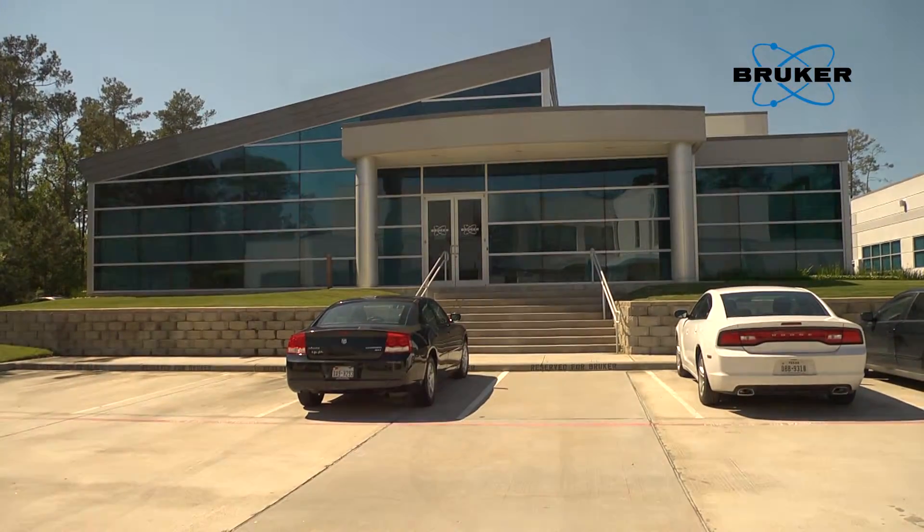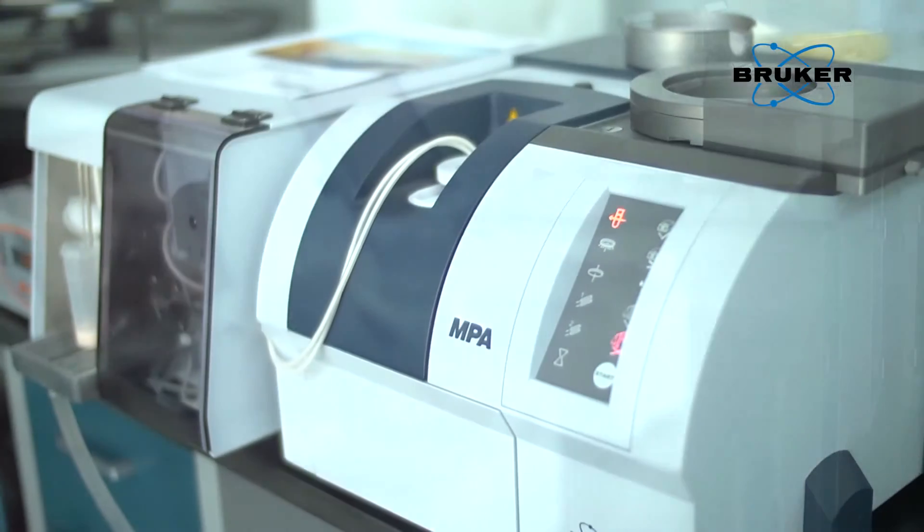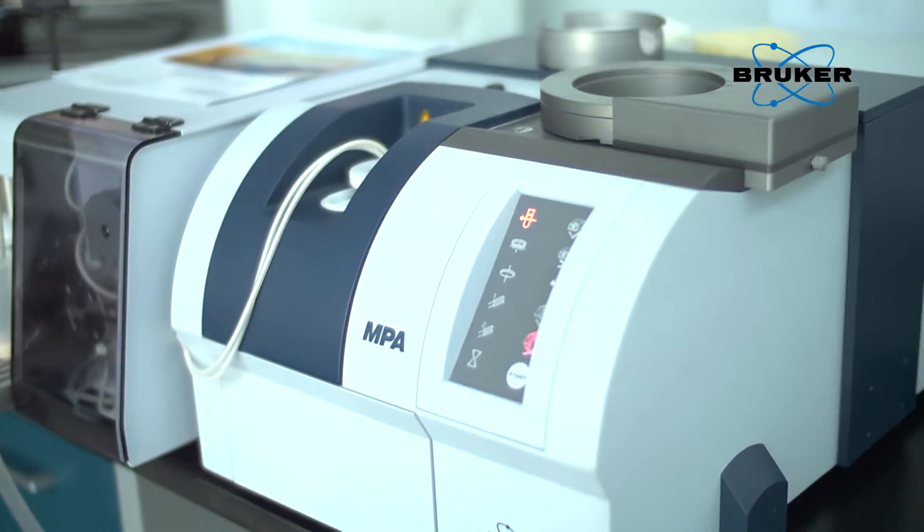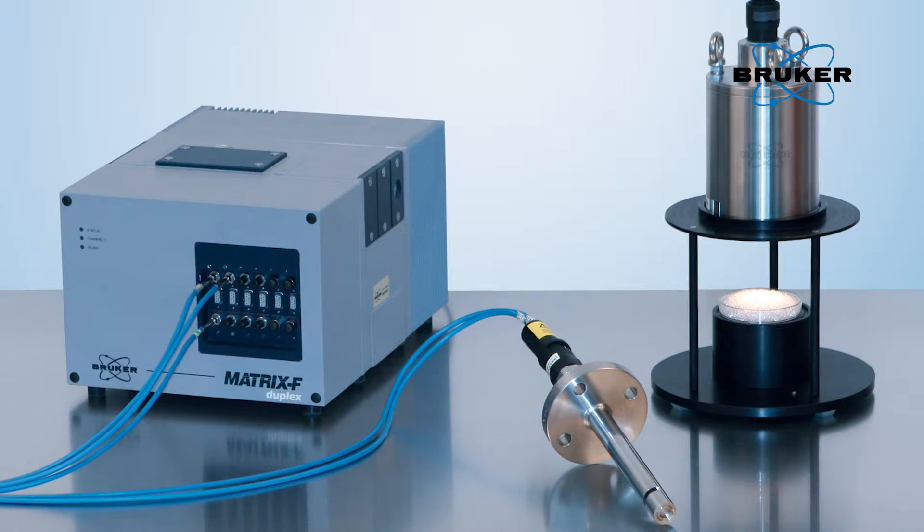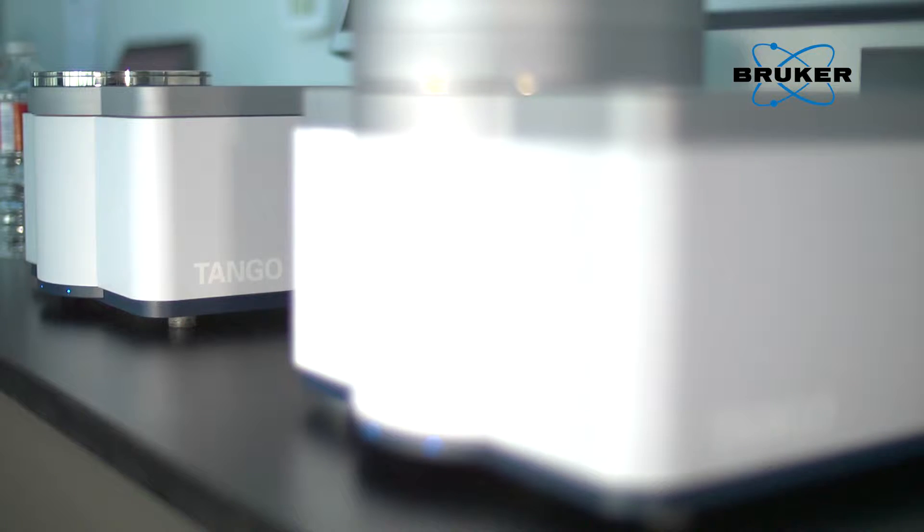Bruker's FT-NIR product line includes the Tango, the MPA, and Matrix-I spectrometers for lab and at-line applications, as well as the Matrix-F series for process control. Faster, simpler, more secure.